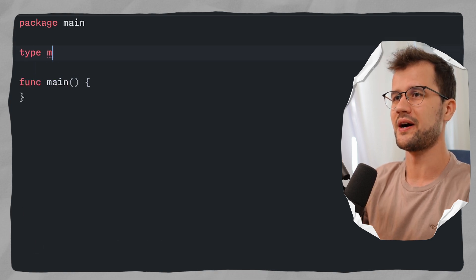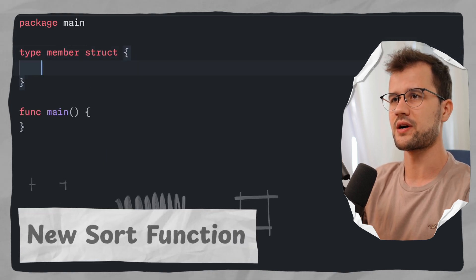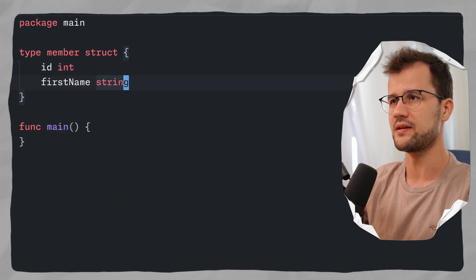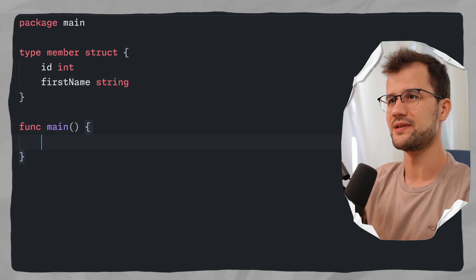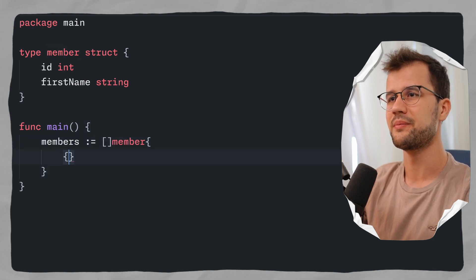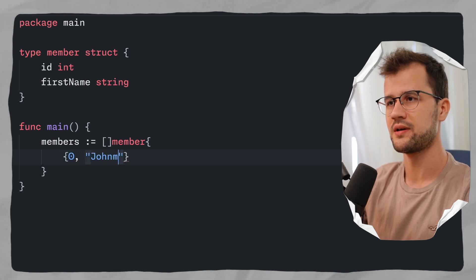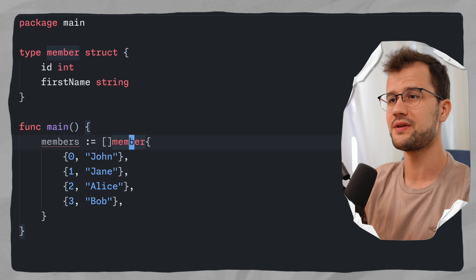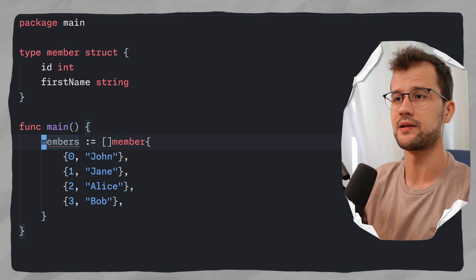Let's get started by defining a simple struct. This struct contains some fields like ID and a string for the name. Then we can directly use this by declaring a member slice and declaring our members — for instance, entries with IDs 0 through 3 and names John, Jane, Alice, and Bob. Now we want to sort this slice by name alphabetically.